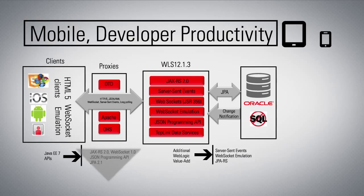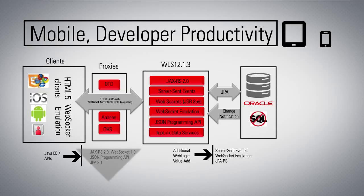We've also implemented support for the new JSON programming API from Java EE 7 for parsing JSON on the server, and updated our Java Persistence API capability. In 12.1.3, we've selected a subset of the Java EE 7 APIs most relevant for developing these new types of applications and included them in the WebLogic Server 12.1.3 release.